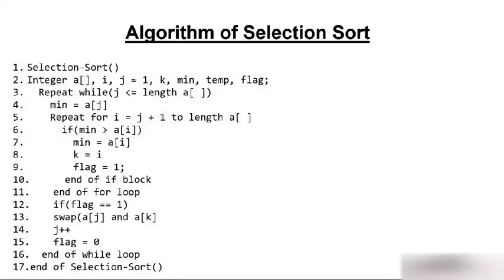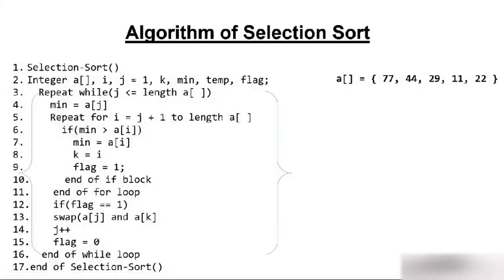Here is the algorithm of selection sort from step 1 to step 7. I'll explain each step clearly. The array is 77, 44, 29, 11, and 22. We need to sort this array using selection sort.